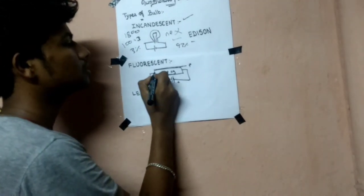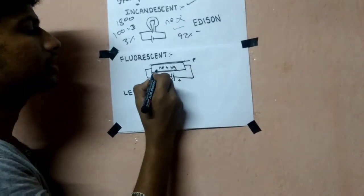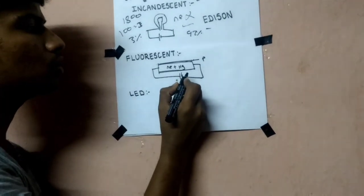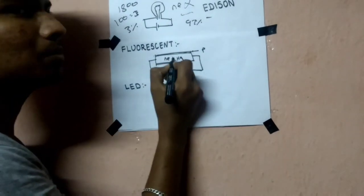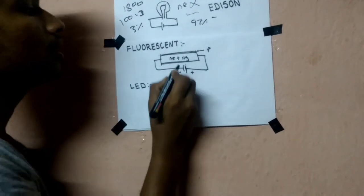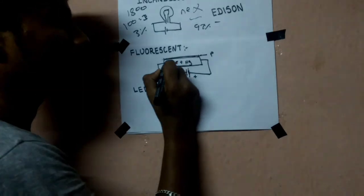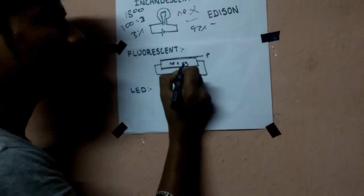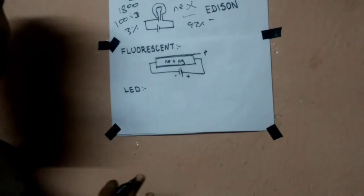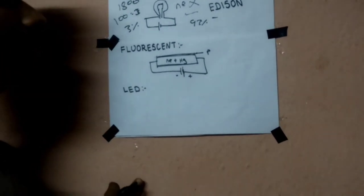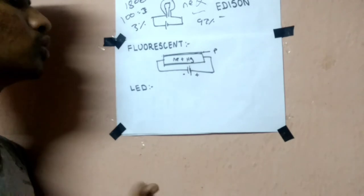Electrons move from cathode to anode, so electrons move through the mercury vapor. The collision produces ultraviolet energy, which provides light energy.